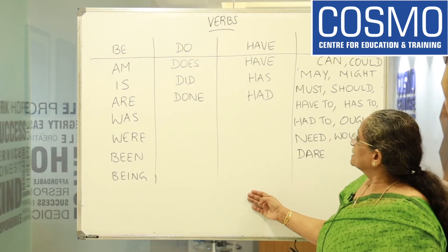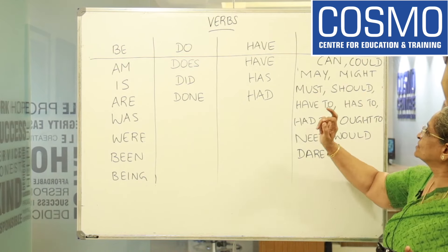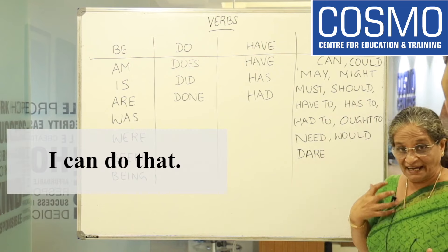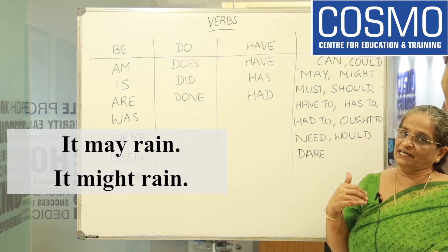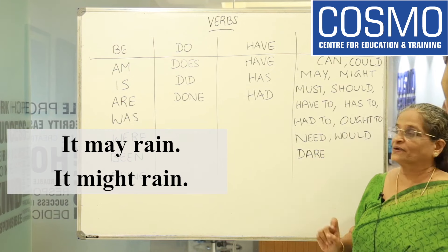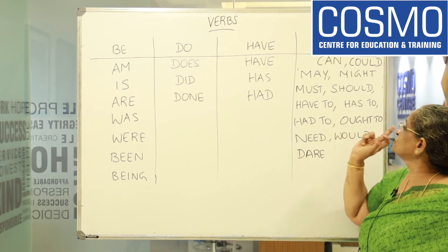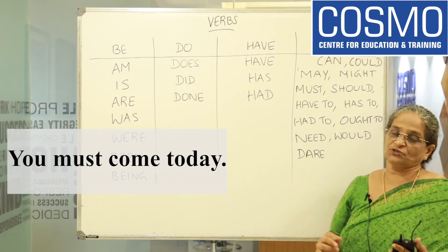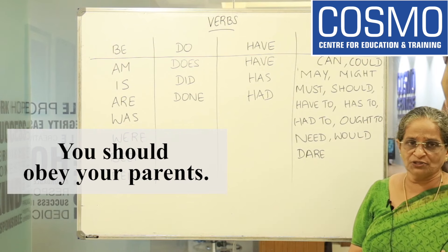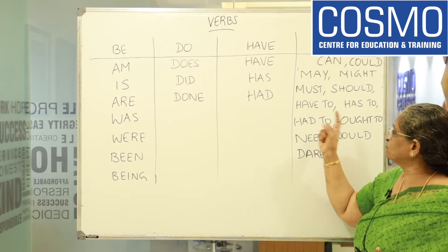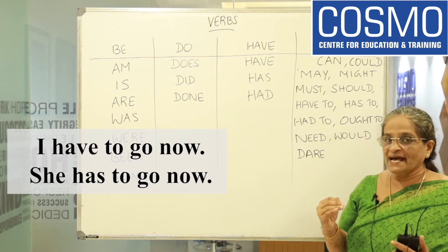The next category is modals. CAN and COULD show ability: 'I can do that.' MAY and MIGHT show possibility — MAY for higher possibility, MIGHT for lesser possibility: 'It may rain,' 'It might rain.' MUST, SHOULD, HAVE TO, and HAS TO all express duty or obligation. 'You must come today.' 'You should obey your parents.' 'I have to go now.' 'She has to go now.'